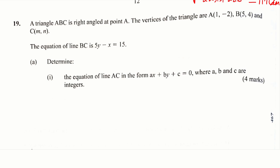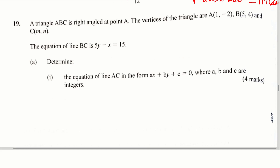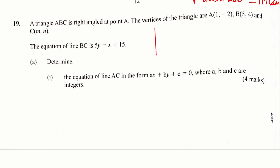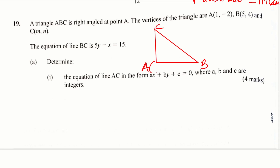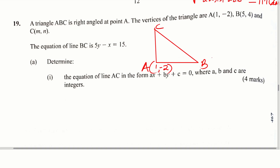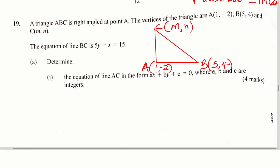We're going to begin by sketching that triangle. So A is at (1, -2), B is at (5, 4), and C is at (M, N). For the first part of the question, we need the equation of line AC. Since this triangle is right-angled at point A, getting the gradient of line AB will assist us to get the gradient of line AC.